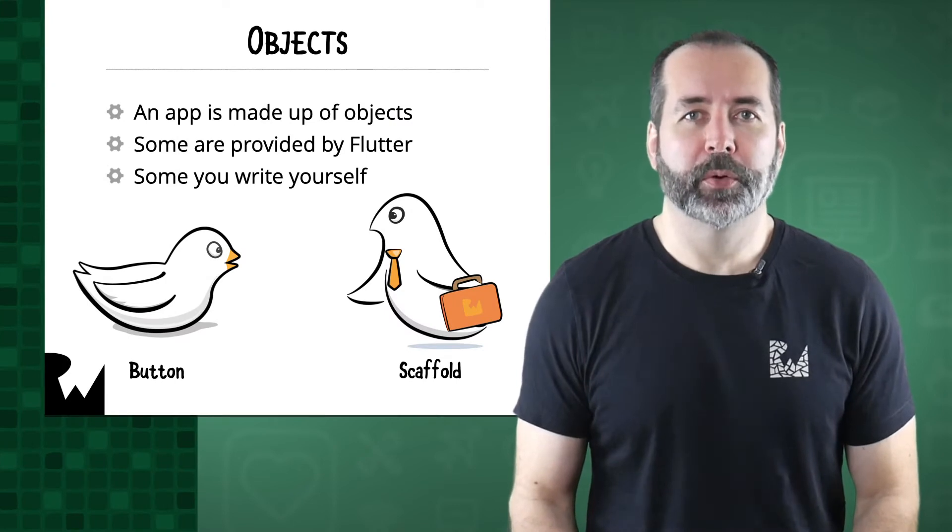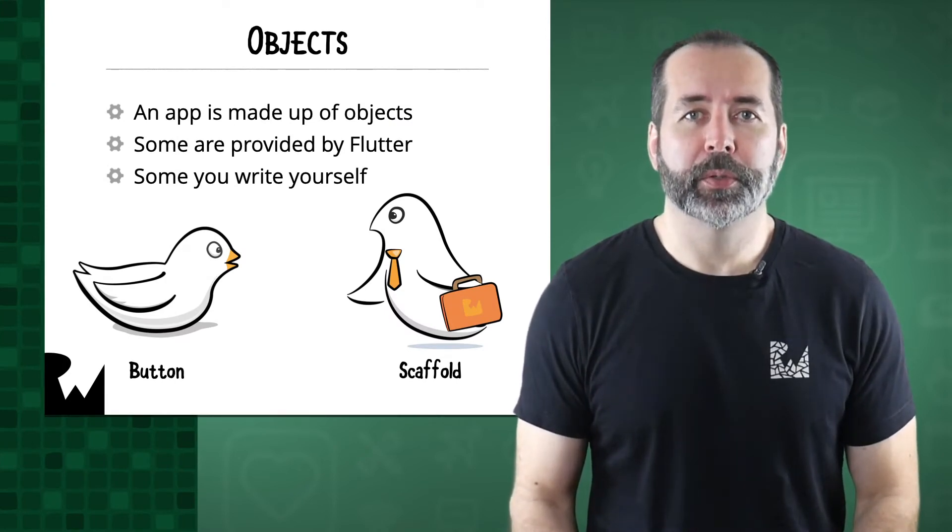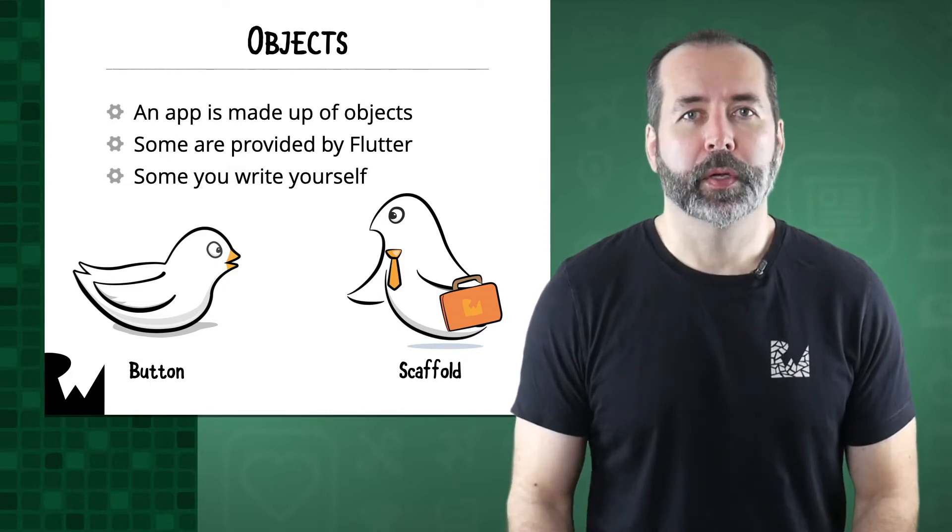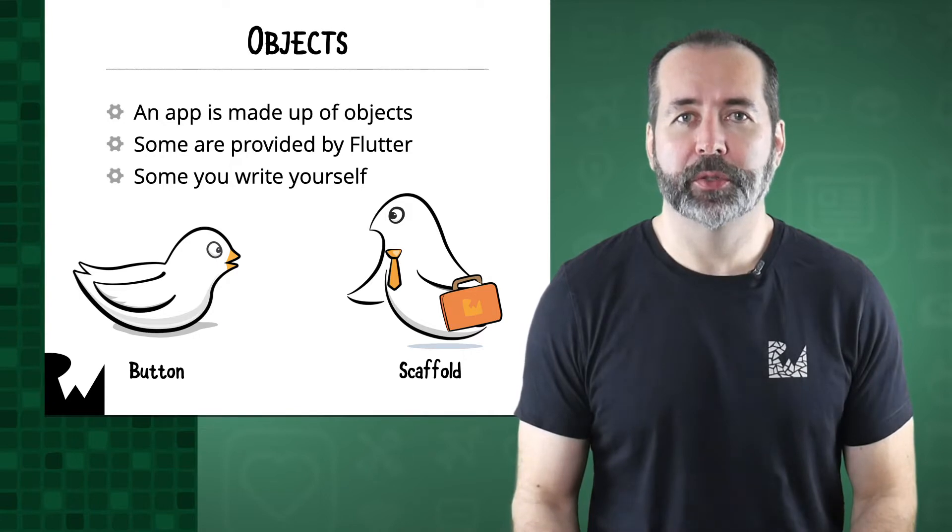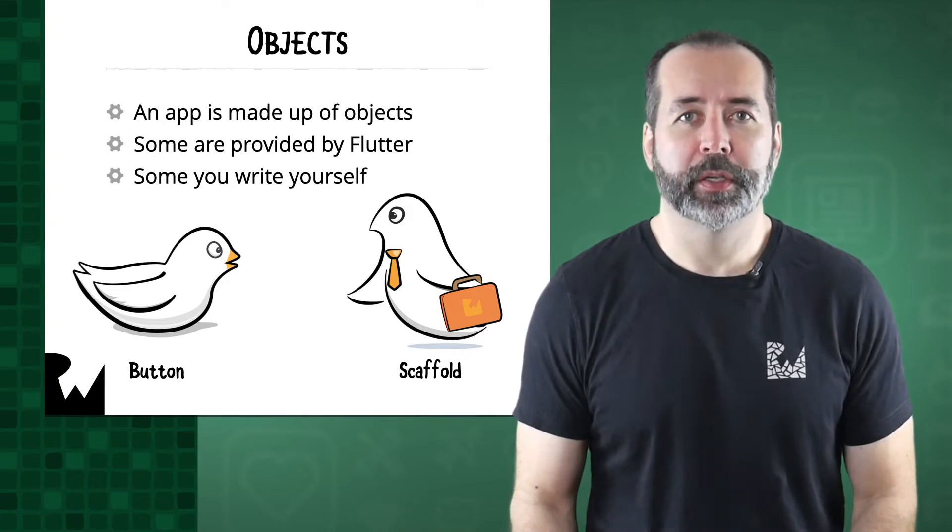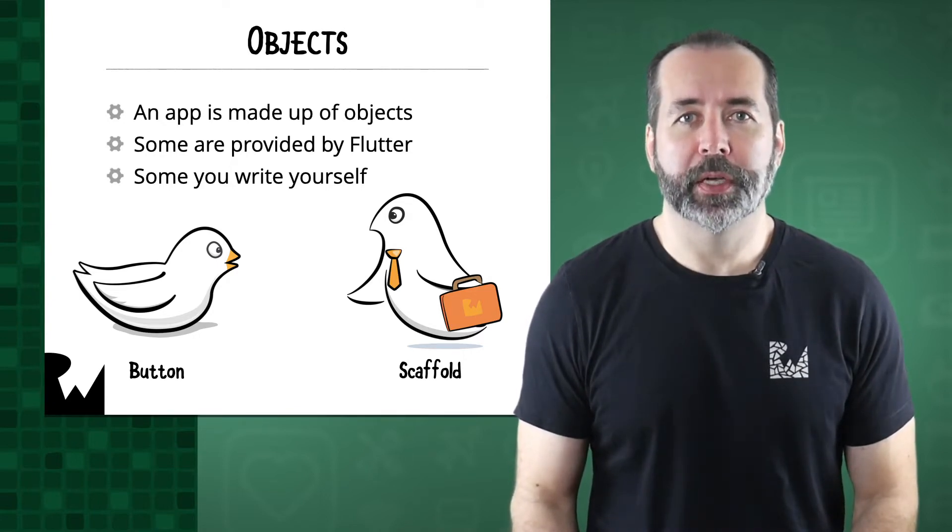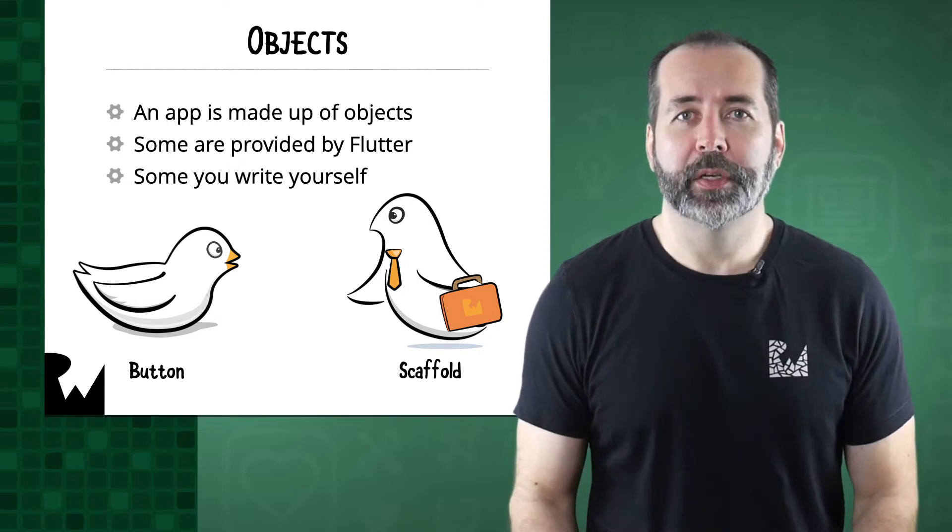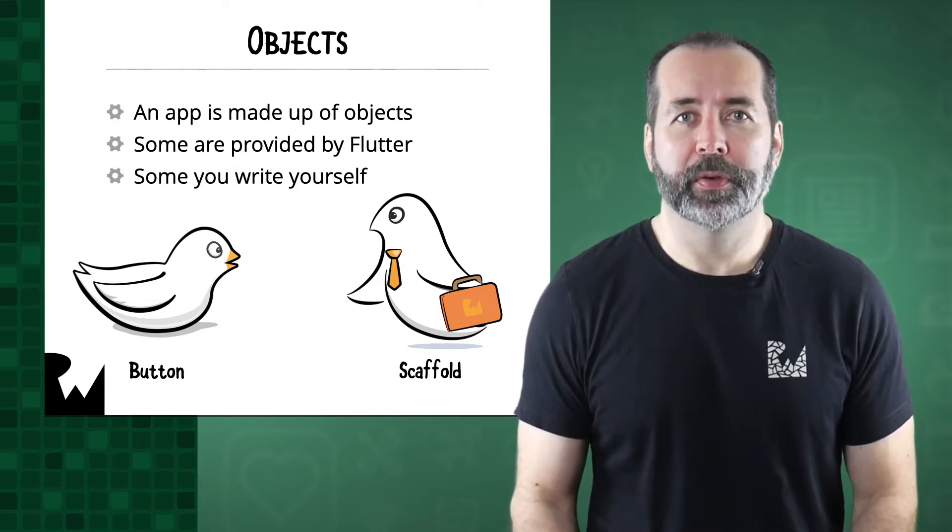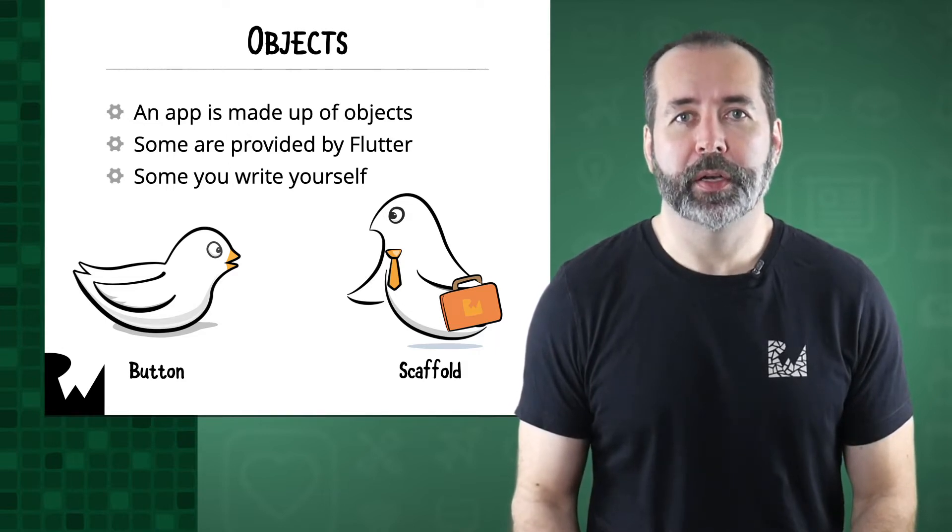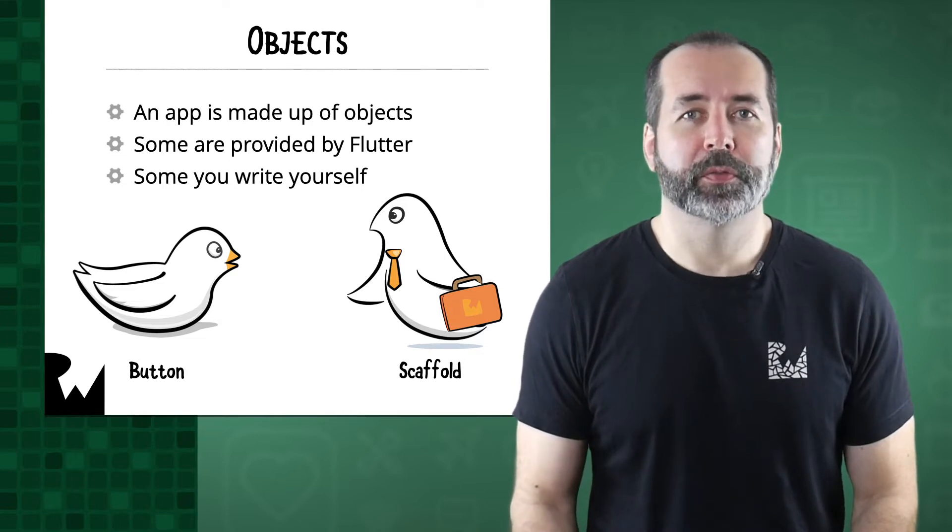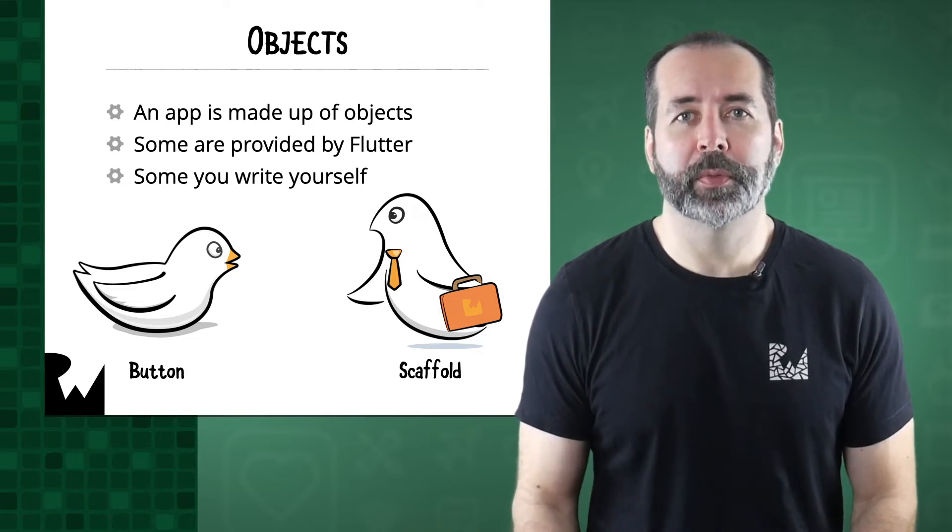Dart is an object-oriented programming language, which means that most of the code you'll write involves objects of some kind. A mobile app, whether written in Swift for iOS, Kotlin for Android, or Dart for Flutter, is essentially made up of objects that can communicate with each other. Many of the objects in a Flutter app are provided by the Flutter framework – for example, the flat button or text objects that are in your app already. Later on, you'll find that sometimes you'll have to program some objects yourself.